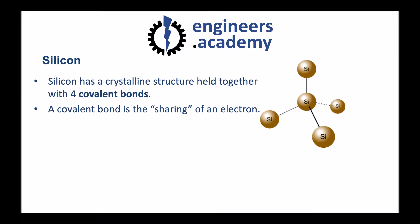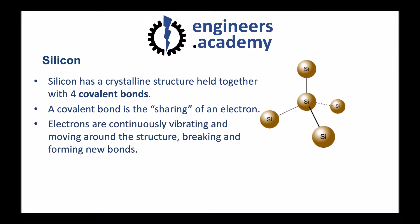A covalent bond is a term for the sharing of an electron. What happens in the silicon lattice in this construction is that electrons are continuously vibrating and moving around the structure, and they're continuously breaking and forming new bonds all of the time.